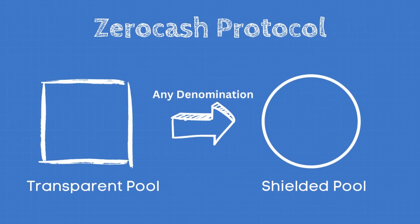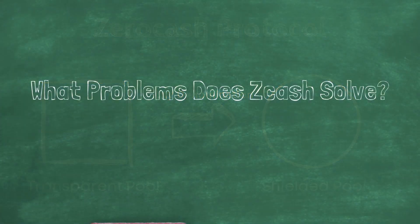Zerocash provided major advantages, the primary being the single shielded pool in which any denominations could be sent to and from it. Over time, Zcash actually developed several shielded pools — we're going to get into that in another video.